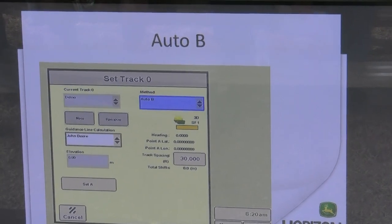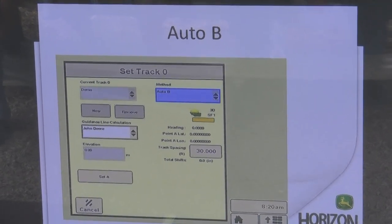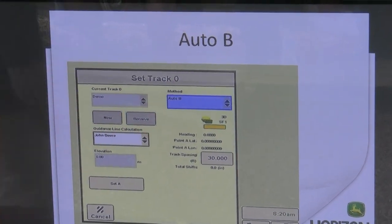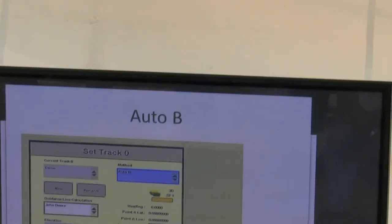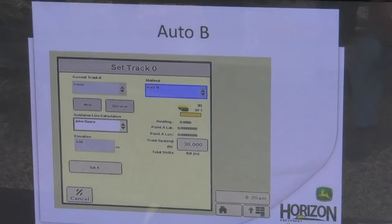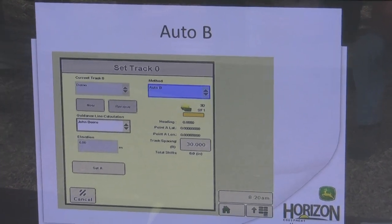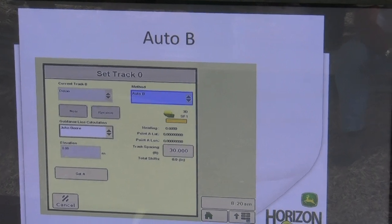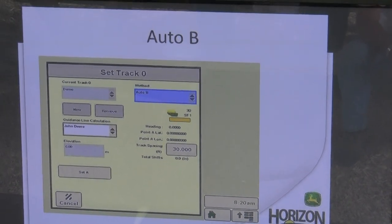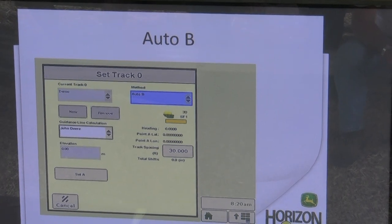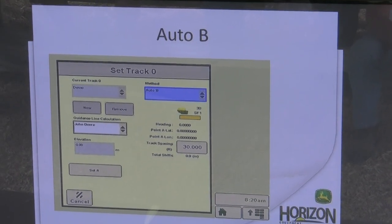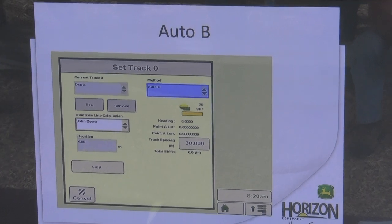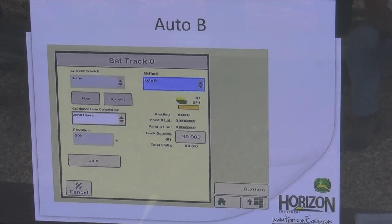Auto B is probably one of our more simple ones. We name it, come over to our method, select Auto B. We're going to hit set A and it gives us a 50 foot countdown. As we start driving, it counts from 50 to zero, automatically sets B for us. The tough part is in 50 foot on a mile long row, how far can you get off quick? Pretty quick. So this one's a little bit more difficult. Smaller fields it works really good, but in bigger fields, A plus heading seems to work a little bit better.